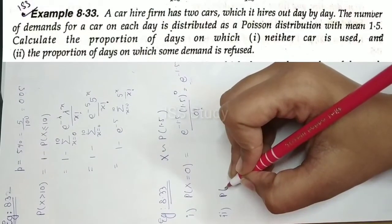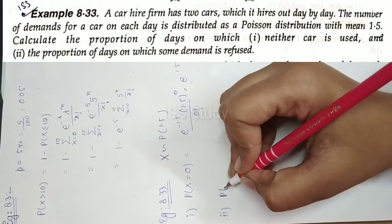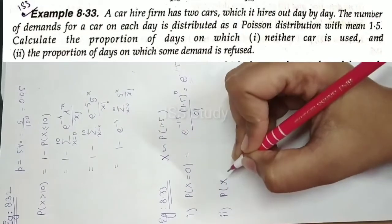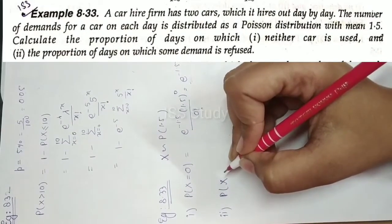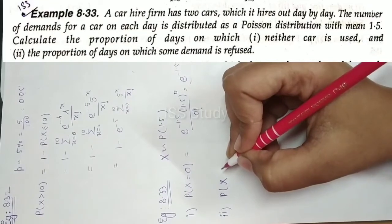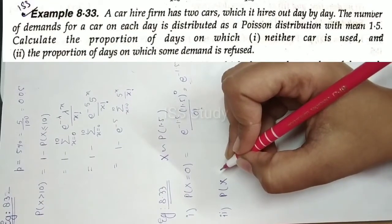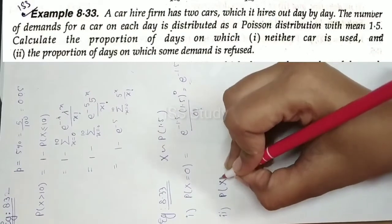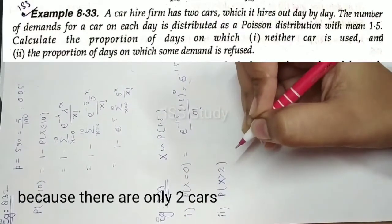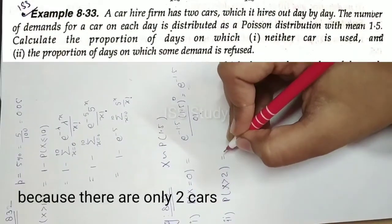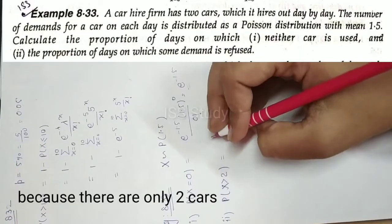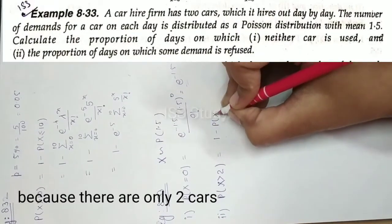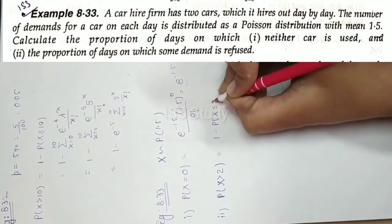We need to find the probability of days when demand is refused. Since the firm has only two cars, if the number of demands x exceeds 2, the demand must be refused. So the probability is P(x > 2), which equals 1 minus P(x ≤ 2).